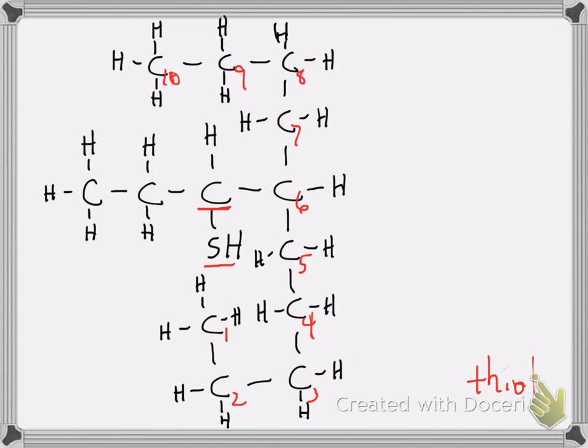I just underlined that carbon, so that carbon must be part of the longest continuous chain. Therefore, the way we have it numbered is incorrect. Here I have through carbon 6, then carbon 7, 8, and 9. There's the longest continuous carbon chain that includes the thiol group.